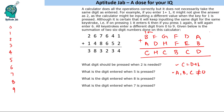Since c equals d plus 1 and c must be a single digit, d must be less than 9 — if d were 9, a carry would make it 10, which is not possible. Also, looking at the column where d plus e equals c, and since c equals d plus 1, we get e equals 1. So 1 is definitely e.